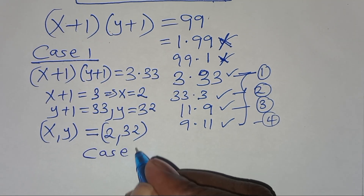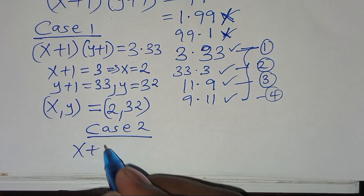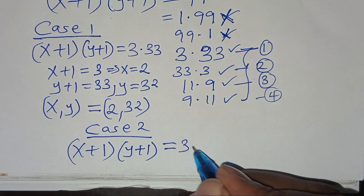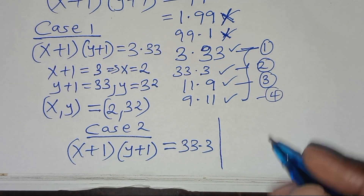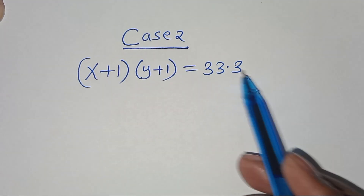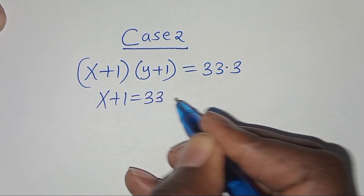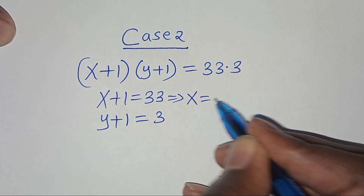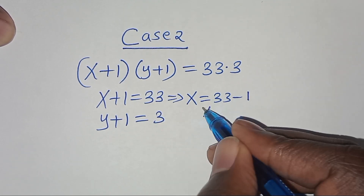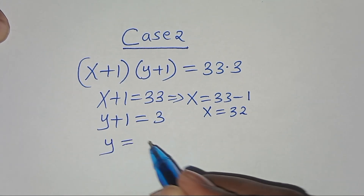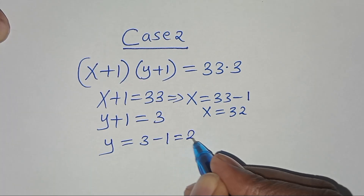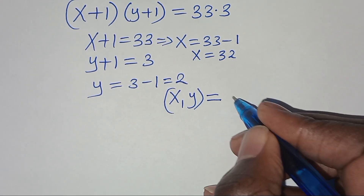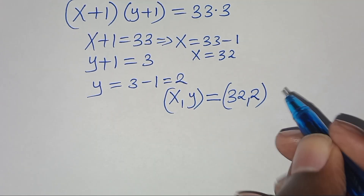Case 2: x plus 1 times y plus 1 equals 33 times 3. So x plus 1 equals 33 and y plus 1 equals 3. From here, x equals 33 minus 1, which is equal to 32, and y equals 3 minus 1, which is equal to 2. So in case 2, (x, y) equals (32, 2). This is the second set of solutions.